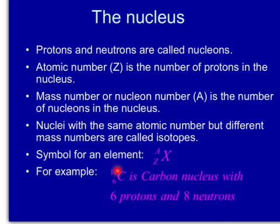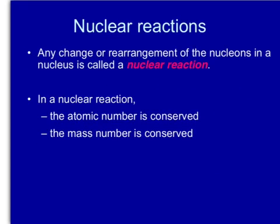Any change or rearrangement of the nucleons in the nucleus is called a nuclear reaction, as opposed to a chemical reaction which only involves electrons. In a nuclear reaction, the atomic number is conserved. The mass number is also conserved.